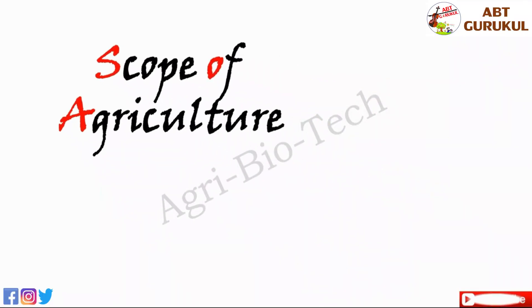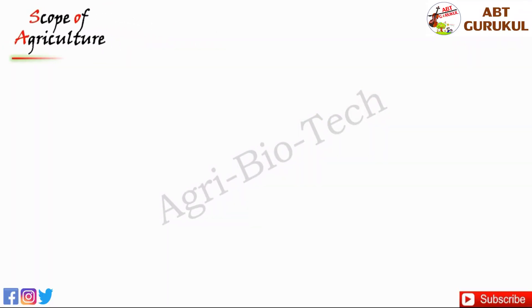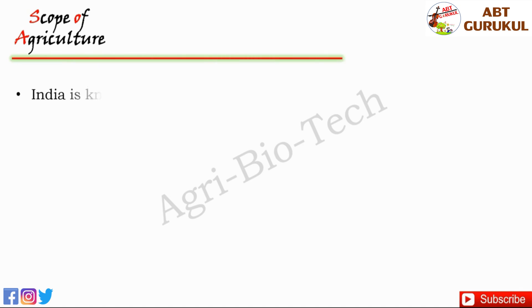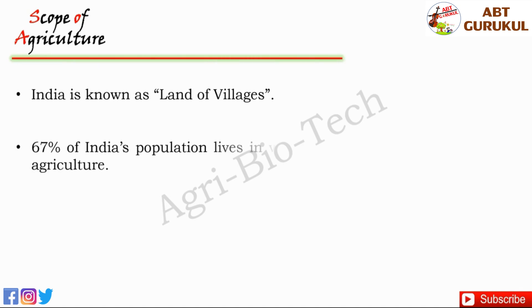Let's see the scope of agriculture. Proverbially, India is called the land of villages. Near about 67% of India's population live in villages, and the main occupation of villagers is agriculture.